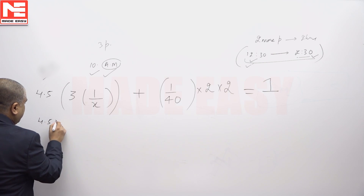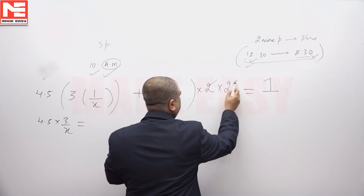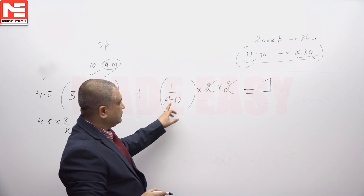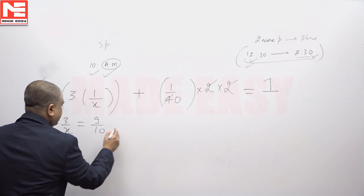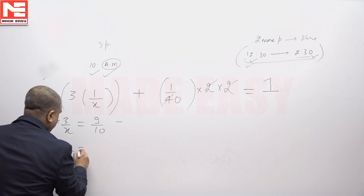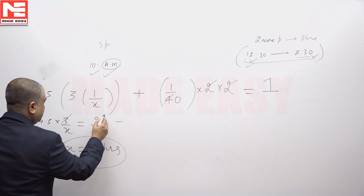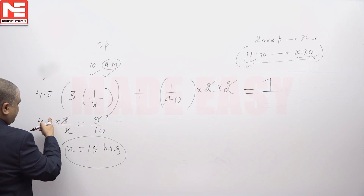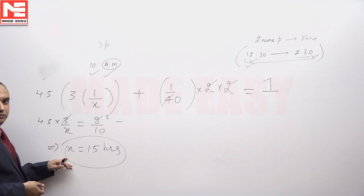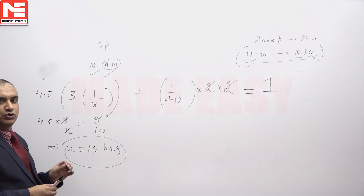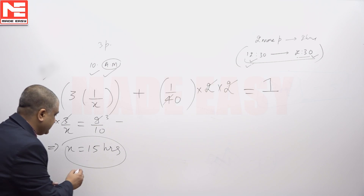Setting up the equation: 4.5 × (3/X) + 2 × (2/40) = 1. Simplifying: 4.5 × 3/X + 1/10 = 1, which gives 13.5/X = 9/10, so X = 15 hours. Each of the initial 3 pipes was capable of filling the tank in 15 hours.